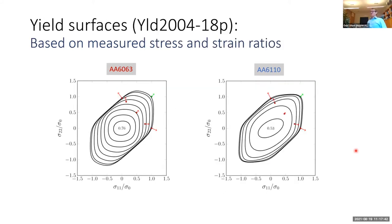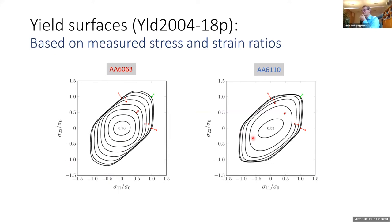To illustrate the anisotropy, we show the Yld2004-18p yield surfaces obtained based on the measured stress and strain ratios. For 6063 and 6110, the yield surfaces in plane stress (σ₁₁ in ED, σ₂₂ in TD, with shear) show a big difference in shape, indicating strong differences in strength and plastic flow. The peak normalized shear stress is very high for the recrystallized material (0.76, well above von Mises) compared to 0.53 for the non-recrystallized material, confirming very strong plastic anisotropy.